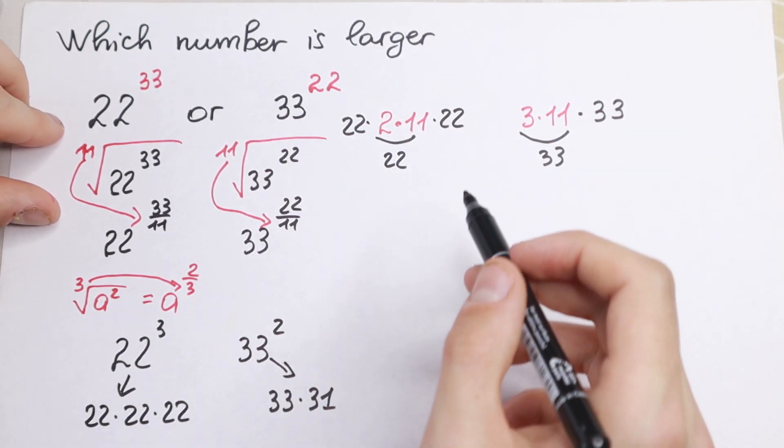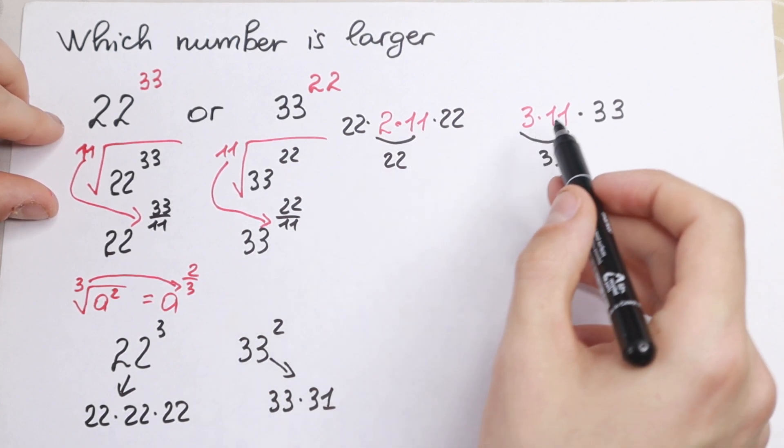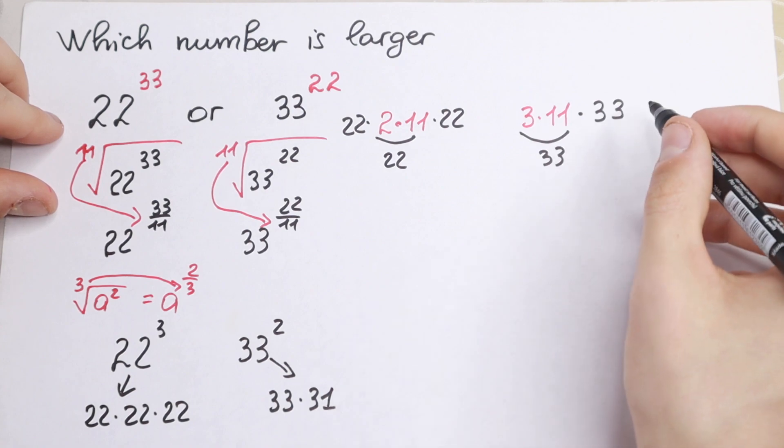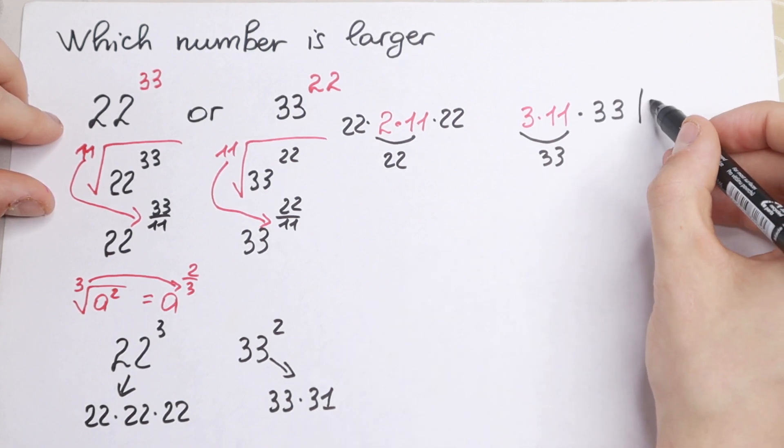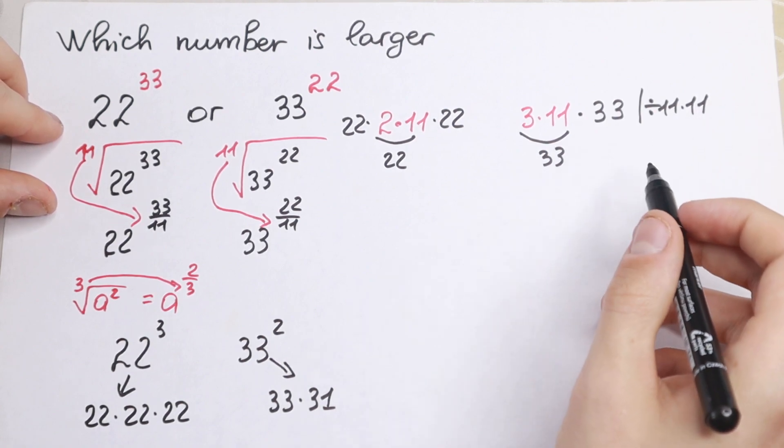As you can see we can divide. Right here we have 2 times 11 and right here 3 times 11. So we can easily divide both sides by 11 times 11.